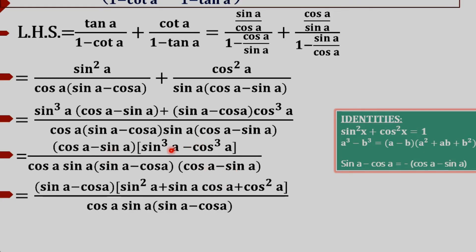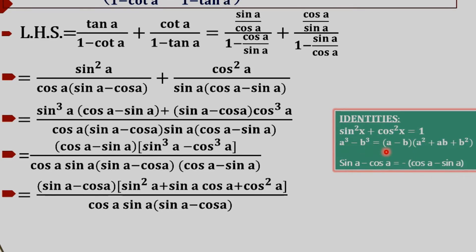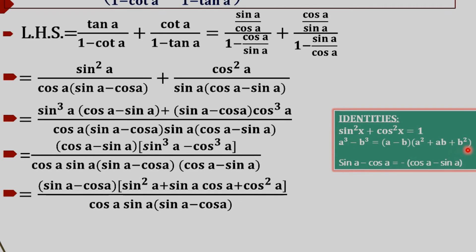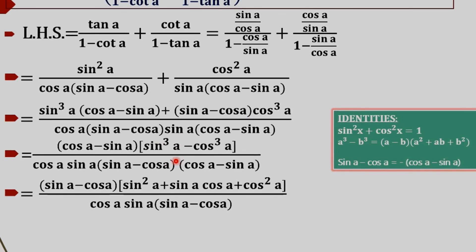The factor (cos A - sin A) is common in both numerator and denominator, so these cancel each other. What remains is (sin³ A - cos³ A) divided by (cos A · sin A · (sin A - cos A)). We can rewrite sin³ A - cos³ A using the identity a³ - b³ = (a - b)(a² + ab + b²), taking a = sin A and b = cos A.